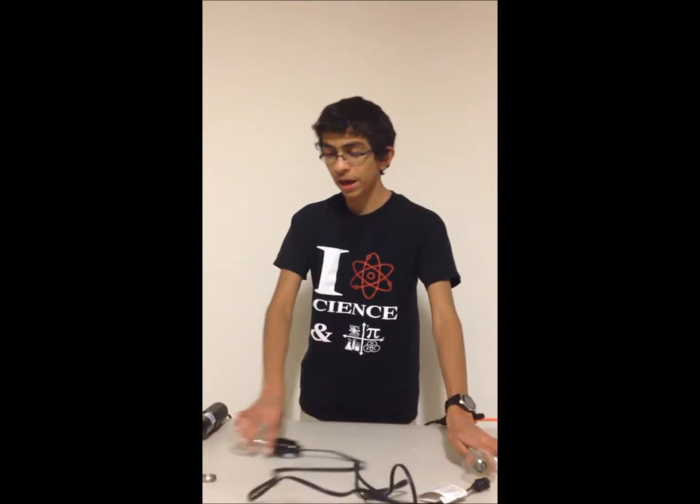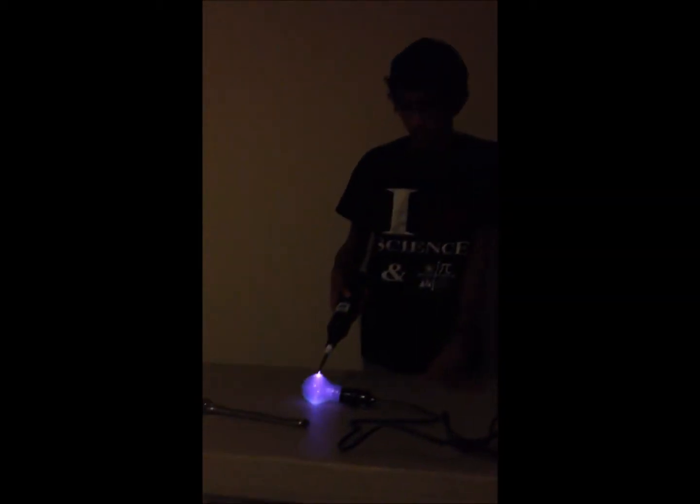Now let me show you how this incandescent light bulb can be excited and why this color occurs. As you can see, as I excite this incandescent light bulb with electricity, there is a color inside, almost in blue.